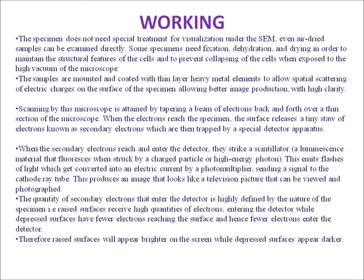Scanning by this microscope is attained by sweeping a beam of electrons back and forth over a thin section of the specimen. The specimen produces secondary electrons and backscattered electrons that emit splashes of light, which get converted into an electric current by a photomultiplier, sending a signal to the cathode ray tube. This produces an image that looks like a television picture that can be viewed and photographed.